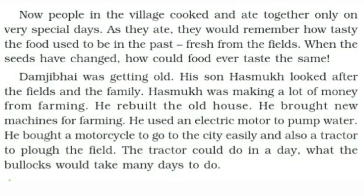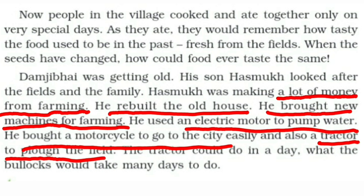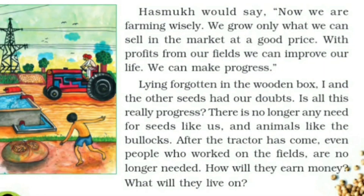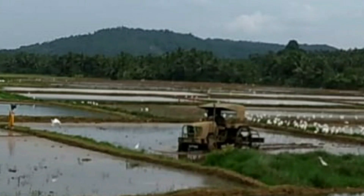'Damji Bai was getting old. His son, Hasmuk, looked after the fields and the family. Hasmuk was making a lot of money from farming. He rebuilt the old house, brought new machines, used an electric motor to pump water, bought a motorcycle to go to the city, and also a tractor to plough the field. The tractor could do in a day what the bullocks would take many days to do.' Hasmuk would say, 'Now we are farming wisely.' Lying forgotten in the wooden box, the seeds had doubts: Is all this really progress?